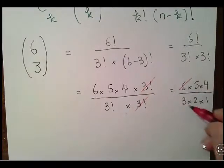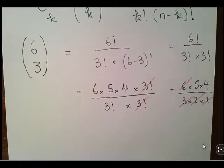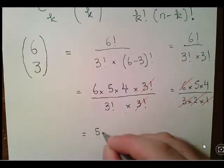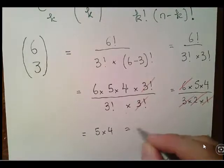That means we are left with 6 by 5 by 4 over 3 factorial, which is 3 by 2 by 1, that's also equal to 6. That cancels out, and we're left with 5 by 4, which is equal to 20.